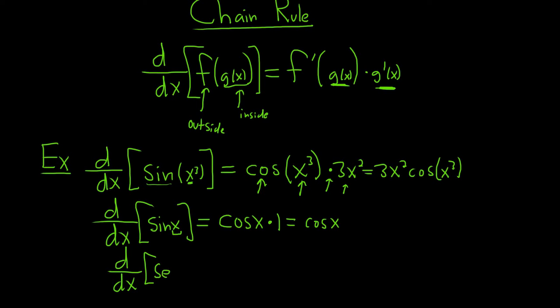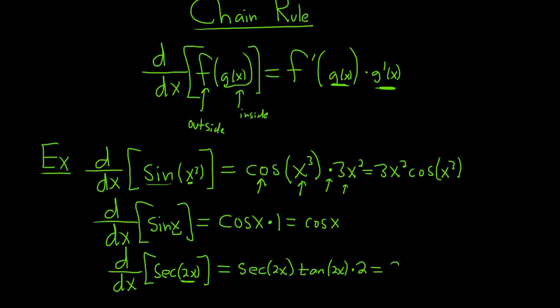Let's make it uncomfortable: d/dx of secant of 2x. The derivative of secant is secant tangent. So here it would be secant 2x tangent 2x — you have to write it twice — times the derivative of the inside. The inside function is 2x, so its derivative is 2. So the answer is 2 secant 2x tangent 2x.